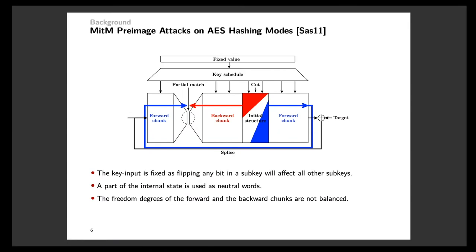Following the above framework of the meet-in-the-middle preimage attack, Sasaki proposed an attack on the hashing modes based on the 7-round AES. Different from previous meet-in-the-middle preimage attacks on other hash functions, neutral words in this attack are not chosen from the message. This is because of the fast diffusion of the AES key schedule, as flipping any bits in a subkey will affect all other subkeys. So it is difficult to split the subkeys into two parts where each one affects only one chunk. Due to this fact, the key input is fixed to pre-chosen constant values, and the neutral words instead are chosen from a part of the internal state.